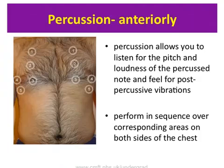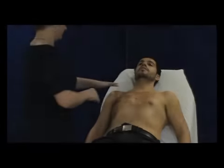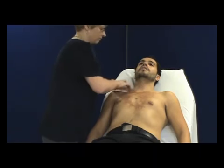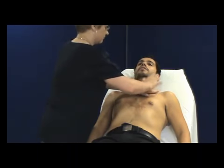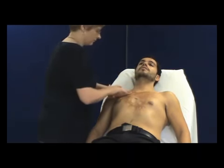Before beginning to percuss the chest wall, it is polite to explain to the patient what you are about to do. Percuss in the supraclavicular fossa over the lung apices, the clavicles, and between 3-4 areas on either side of the lung on the anterior aspect. Do not forget to listen in the axilla area.